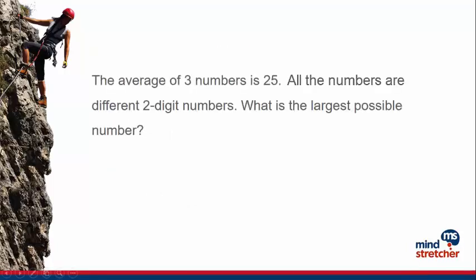Let's take a look at the next question. The average of 3 numbers is 25. All of the numbers are different 2-digit numbers. What is the largest possible number?